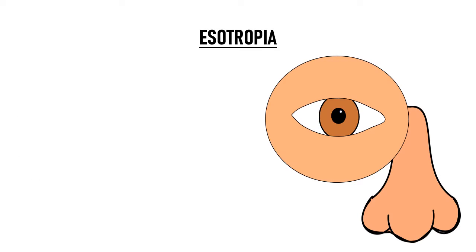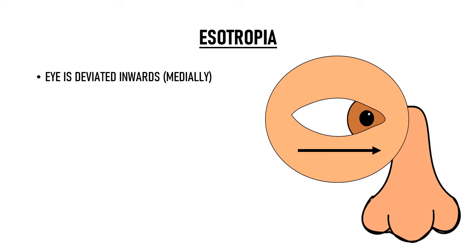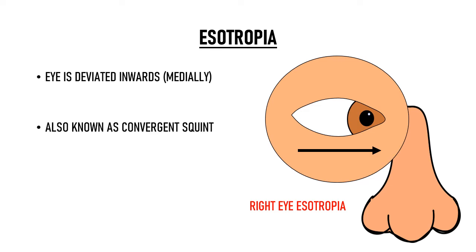Esotropia is when the eye is deviated inwards, medially, that is towards the nose, nasally. So you can see in this image that this person's right eye is deviated inwards, so this person has right eye esotropia. Esotropia is also known as convergent squint, so this is right eye esotropia or right eye convergent squint.